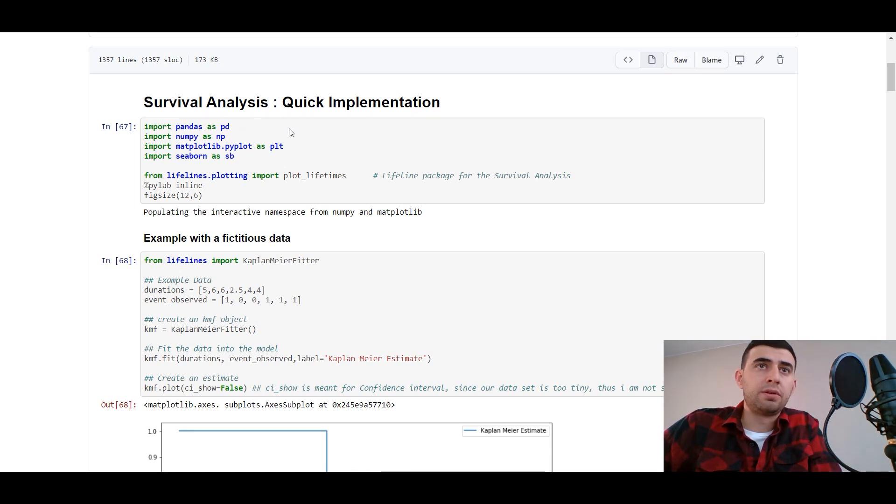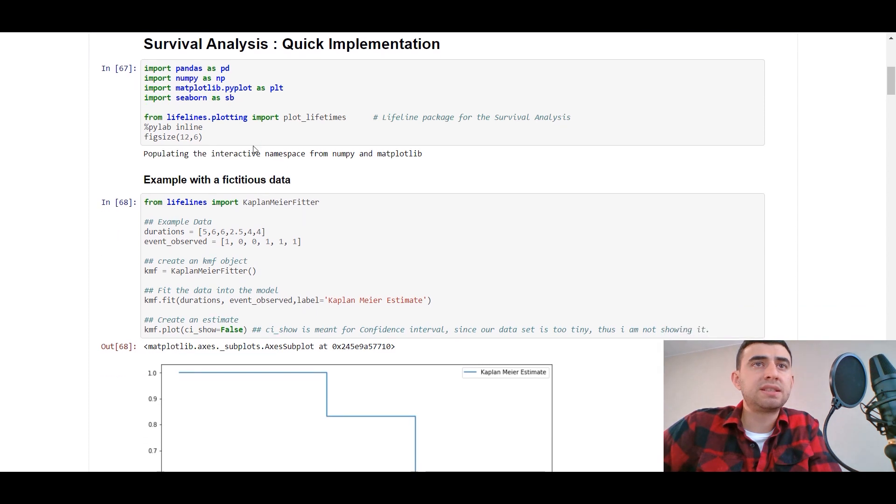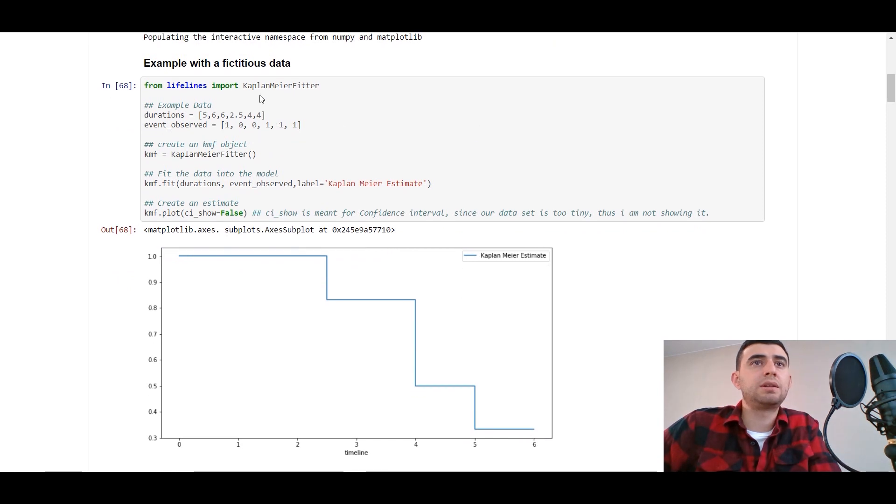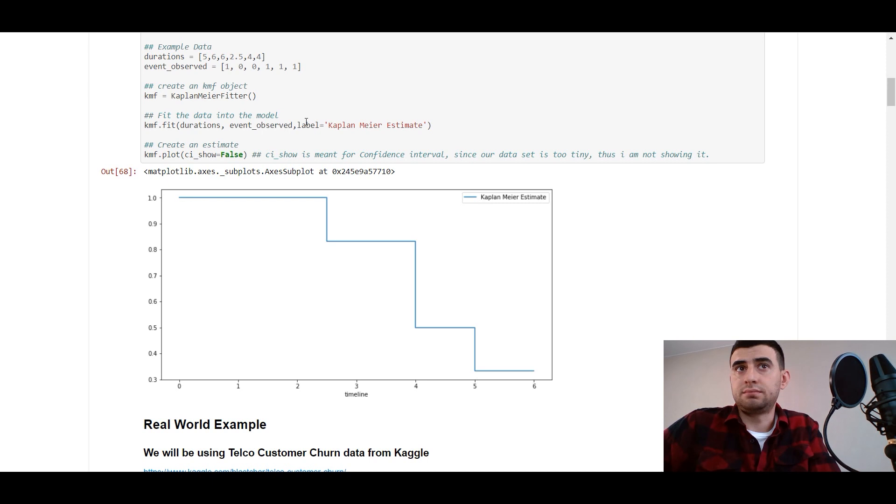For quick implementation, we import pandas as pd for dataframes, numpy as np for linear algebra, matplotlib for plotting, seaborn for plotting, and there is a special library called lifelines for implementation of survival analysis. First of all, let's start with fixtures data. We've got example data with durations and event observed zero one, survived or not. We create an object like a fitter with the fit method, import the data in the fitter with durations and event observed, and we can get a Kaplan-Meier estimate and plot it.